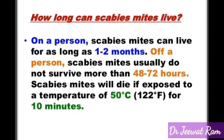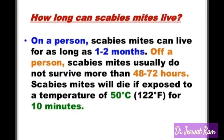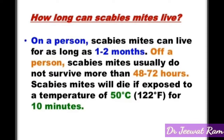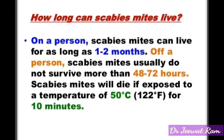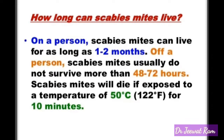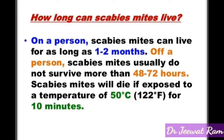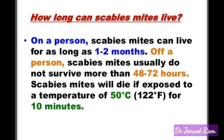How long can scabies mites live? On a person, scabies mites can live for as long as one to two months. Off a person, scabies mites usually do not survive more than 48 to 72 hours. Scabies mites will die if exposed to a temperature of 50 degrees Celsius for 10 minutes.